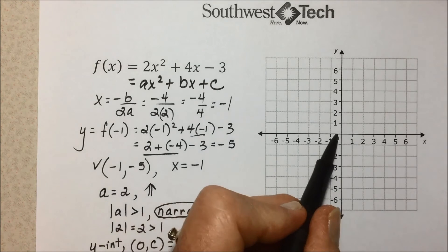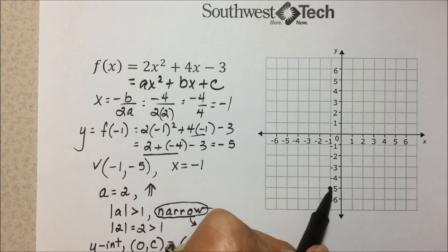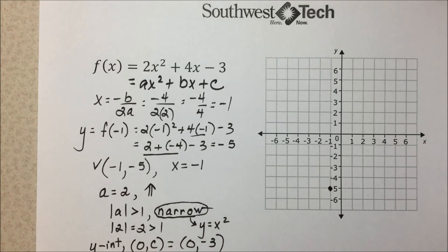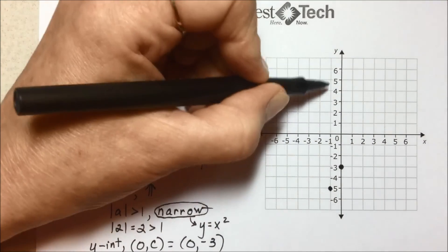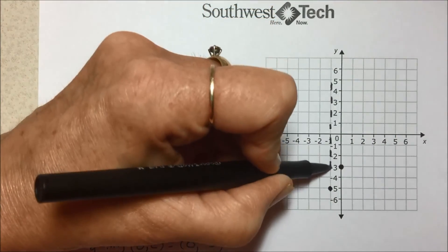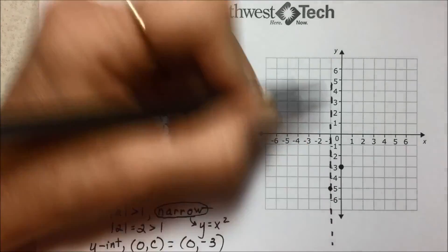So starting with the vertex, (-1, -5), we have a y-intercept of (0, -3). Our axis of symmetry is x = -1, so it's falling through here.